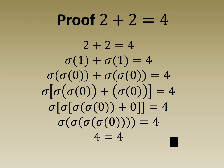On the first line, we just write the statement we are trying to prove. On the second line, we replace the numeral 2 with its definition. And on the third line, we replace the numeral 1 with its definition.